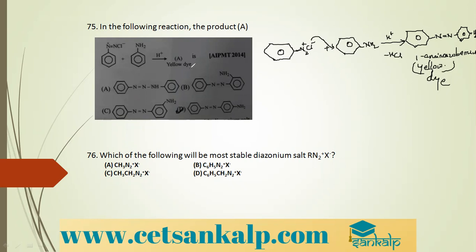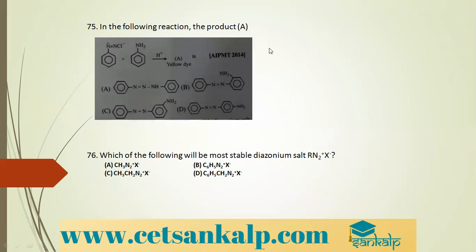Q76: Which diazonium salt is most stable? Aromatic diazonium salts are more stable because the positive charge is dispersed into the benzene ring. Option D (benzyl diazonium) is not aromatic — the nitrogen is not directly attached to the benzene ring but to a side-chain carbon. Option B, phenyl/benzene diazonium halide, is the correct answer — benzene diazonium halides are more stable than alkyl diazonium halides.